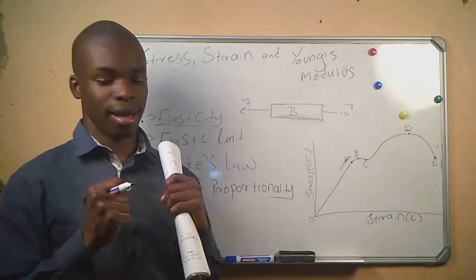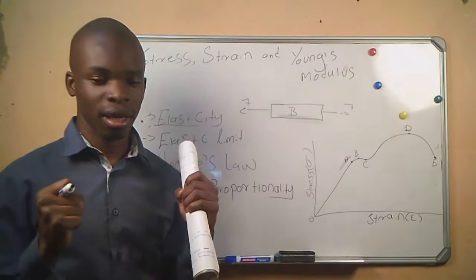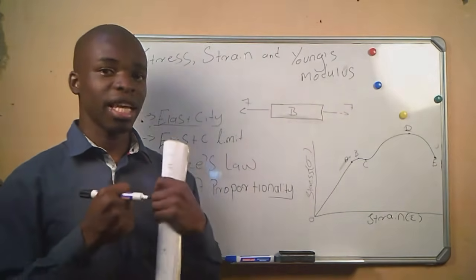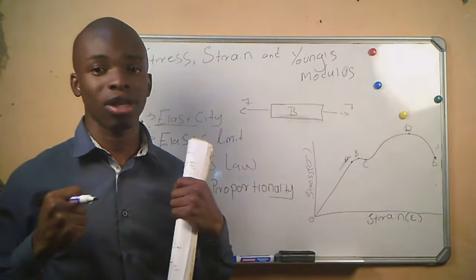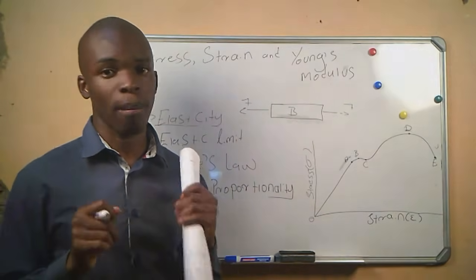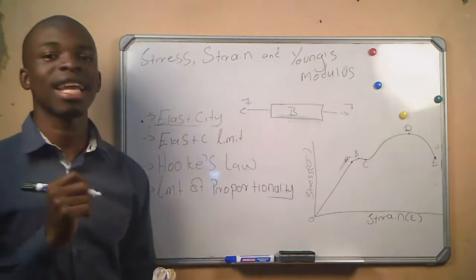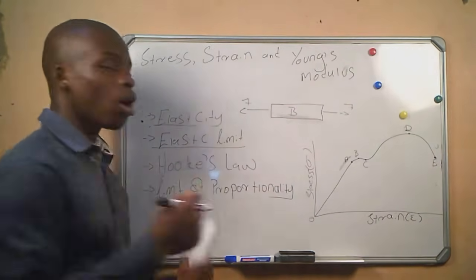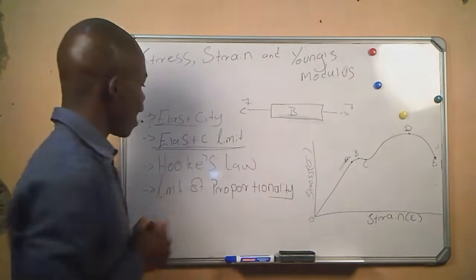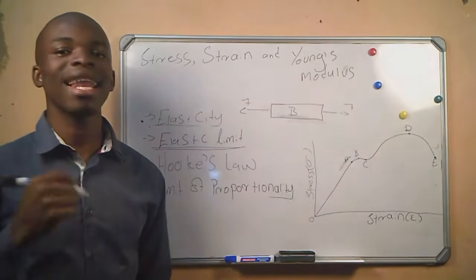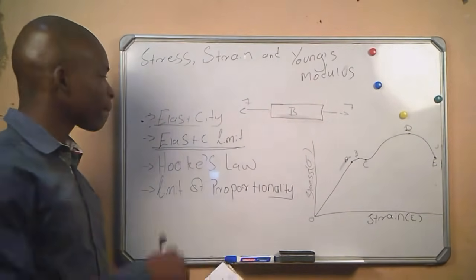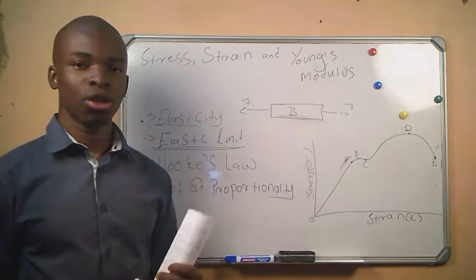Let's take the example of a spring. When we apply a tensile force to a spring and then remove that force, the spring will go back to its original form. But if we keep applying that force to the spring, it will come to a point where it can no longer go back to its original form. That doesn't mean the spring is not elastic — it simply means that we exceeded what we call the elastic limit.